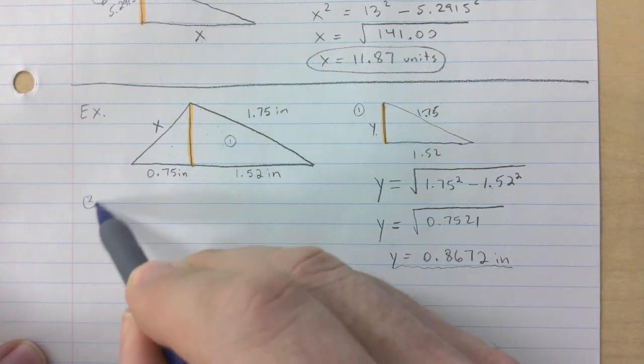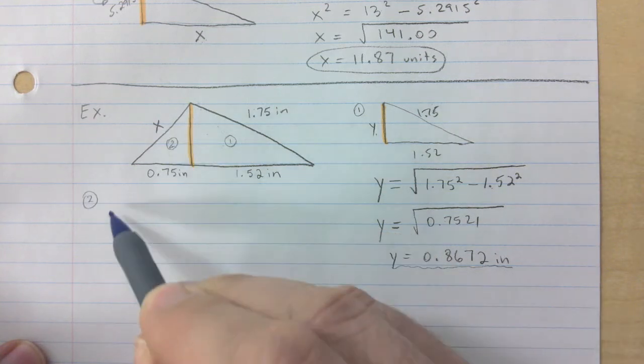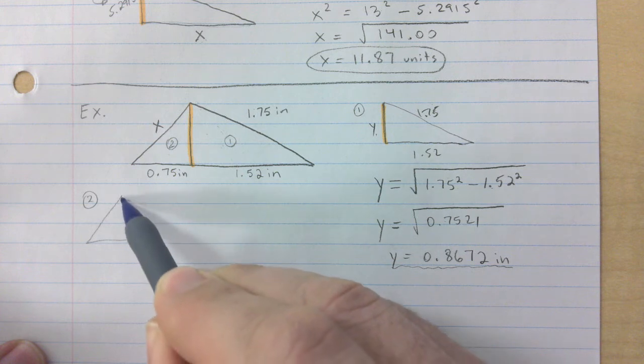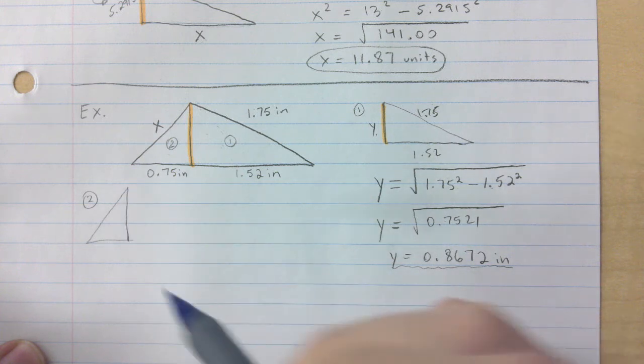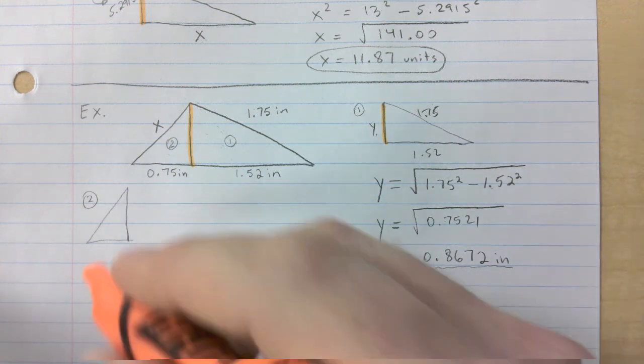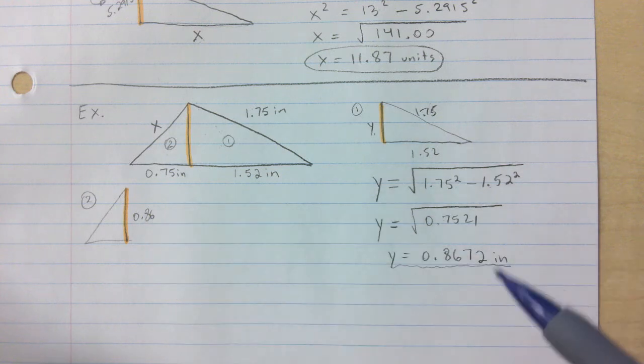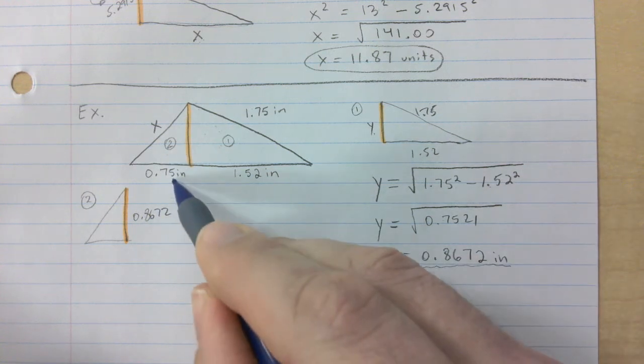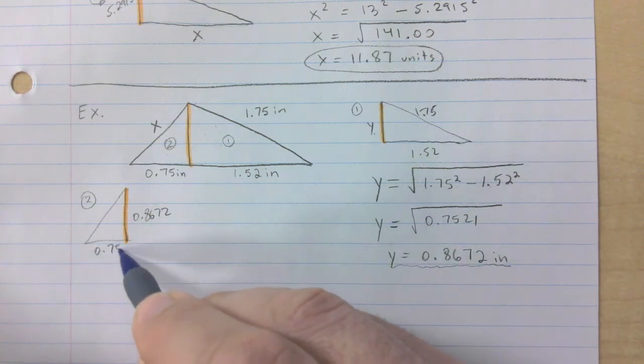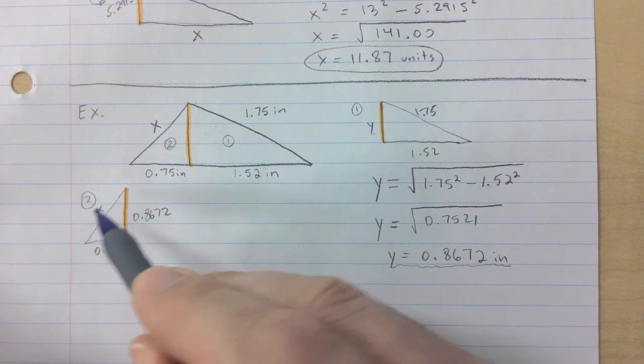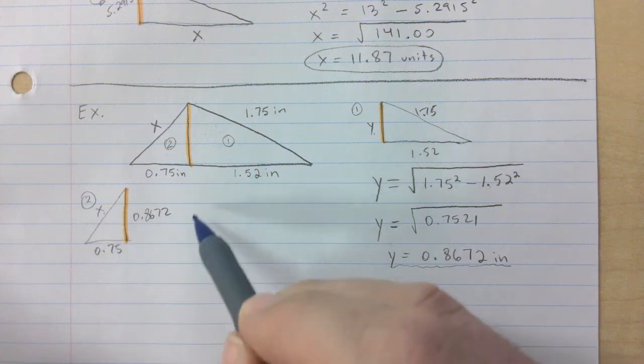With the second triangle here, I now found this side that they both share. So this is 0.8672, this is 0.75, and I want x. X is the hypotenuse. Always, you're always gonna have to take the square root at the end if you want to find the answer anyway, so you might as well just get it done and over with.